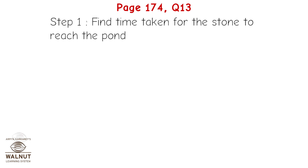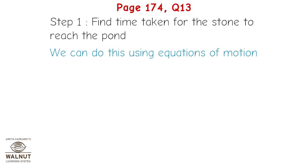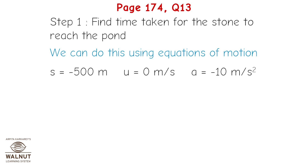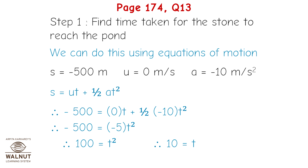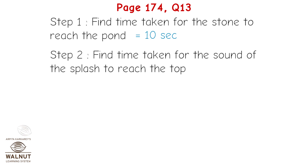Step 1: Find the time taken for the stone to reach the pond using equations of motion. s = −500 m, u = 0 m/s, a = −10 m/s². Using s = ut + ½at², we get −500 = −5t², therefore t² = 100, so t = 10 seconds. The time taken for the stone to reach the pond is 10 seconds.